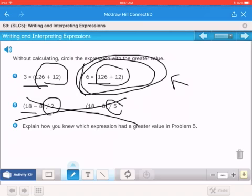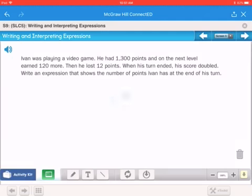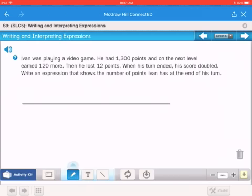Down at the bottom, it says, Ivan was playing a video game. He had 1,300 points, and on the next level, he earned 120 more. Then he lost 12 points. When his turn ended, his score doubled. Write an expression that shows the number of points he has at the end of his turn. So we start out with what he had, which would have been 1,300. So that's the first part.